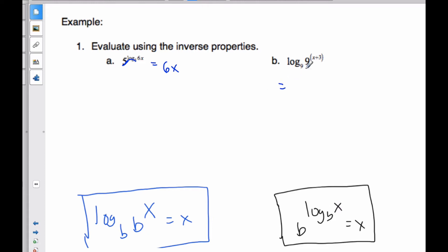Similarly here, I know log of a base 9 of 9 to the x plus 3. Again, these are inverses. They cancel each other, so I end up with x plus 3. If I go through the steps, imagine I started at x plus 3. I raised it to the exponential, 9 to the exponential of x plus 3, and then I undid it by doing a logarithm of base 9. These cancel, and I'm left with what I started with.